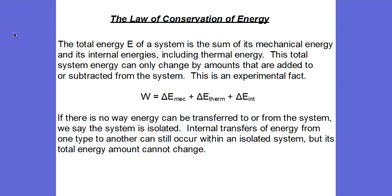This leads us to the law of conservation of energy. The total energy E of a system is the sum of its mechanical energy and its internal energies, which includes thermal energy. This total system energy can only change by amounts that are added to or subtracted from the system — and this has been proven experimentally. W, the work done by an external force, represents the transfer of energy to or from the system, and that change in energy can fall into several categories: mechanical energy, thermal energy, or other internal energy.